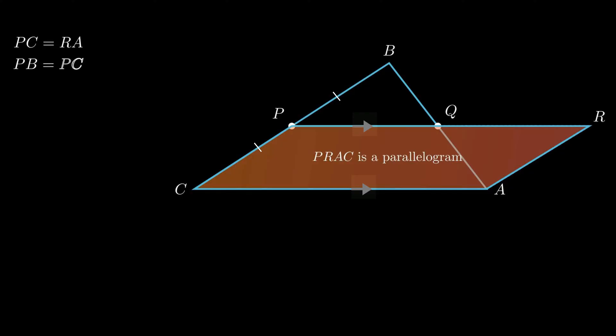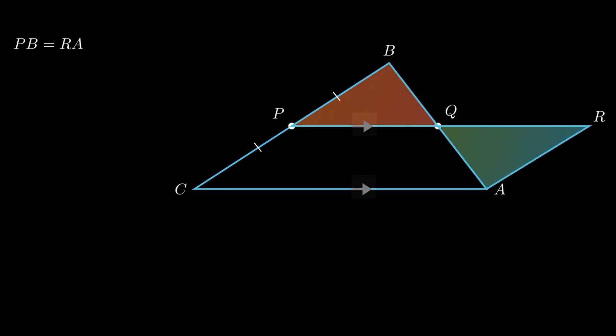Now in triangle PBQ and triangle AQR, angle PQB is equal to angle RQA as vertically opposite angles are equal. Also angle PBQ is equal to angle RAQ as interior opposite angles are equal.